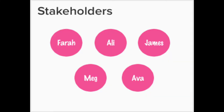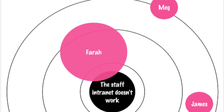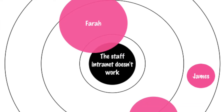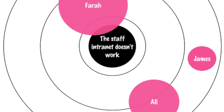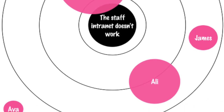In this team we have got five people: Farah, Ali, James, Meg, and Ava. Here we have a stakeholder map — a very simple example. In the center of the map sits the problem, and surrounding the problem are these pink circles. Each circle represents a stakeholder, and these circles are of different sizes. This is a quick visual of the stakeholders involved and how they interact.